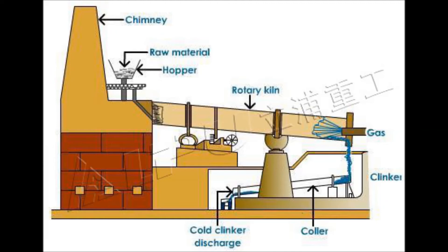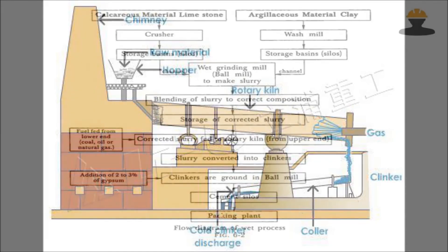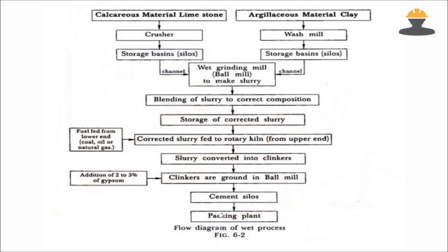This screw produces cement. This is the raw material — it is a clinker. The material is a clinker.